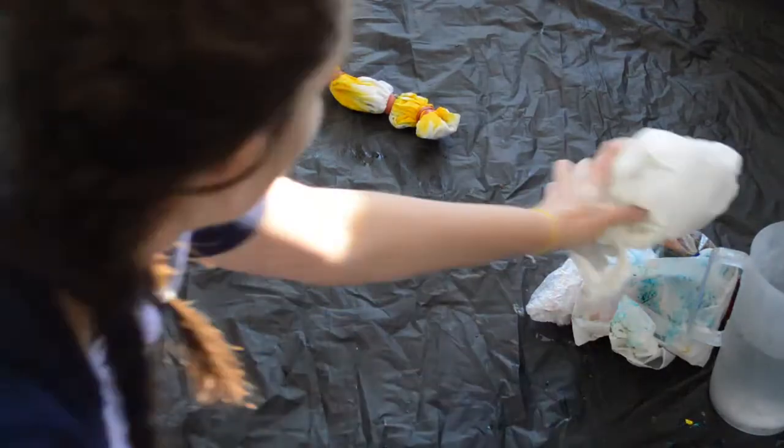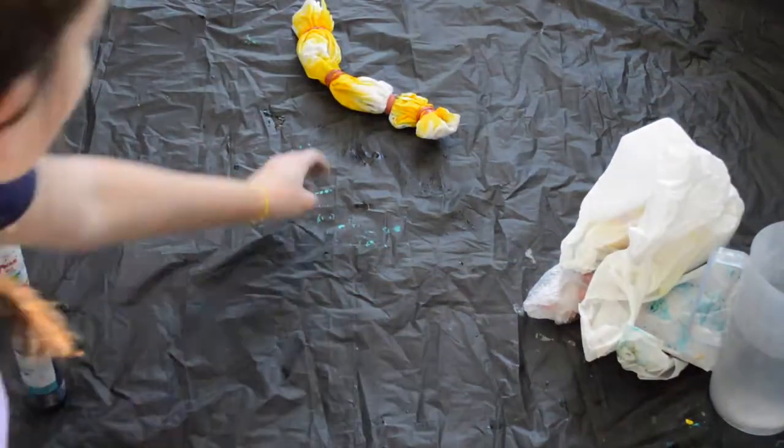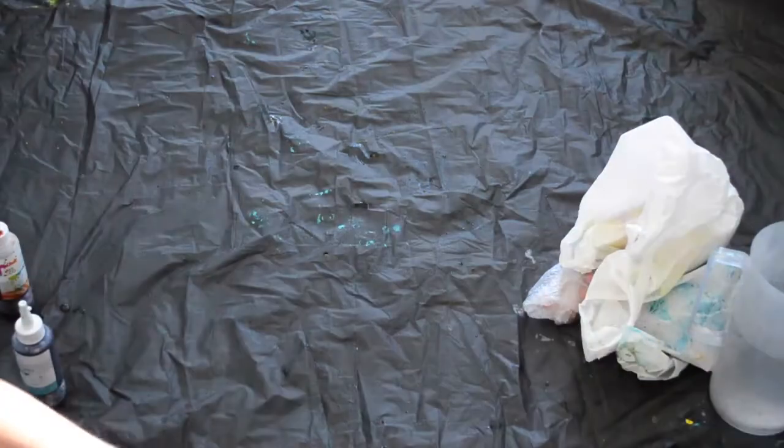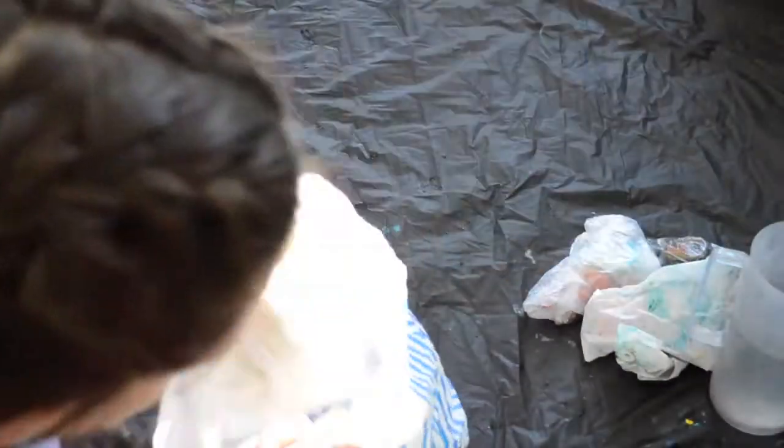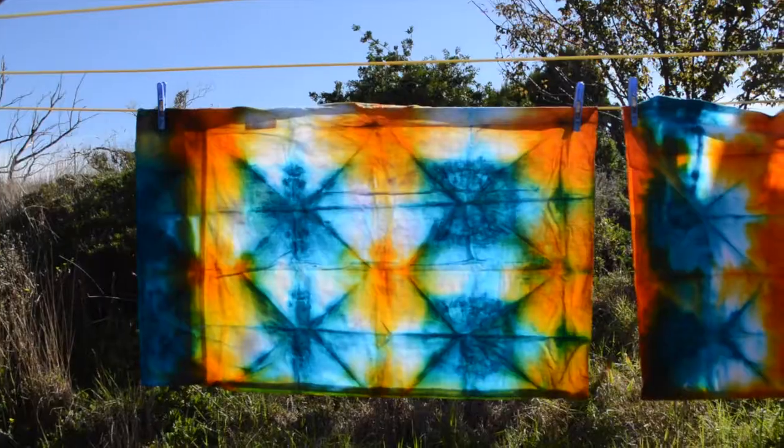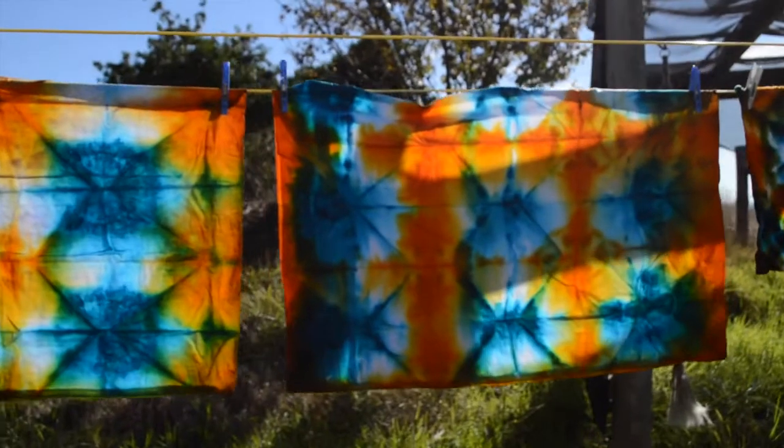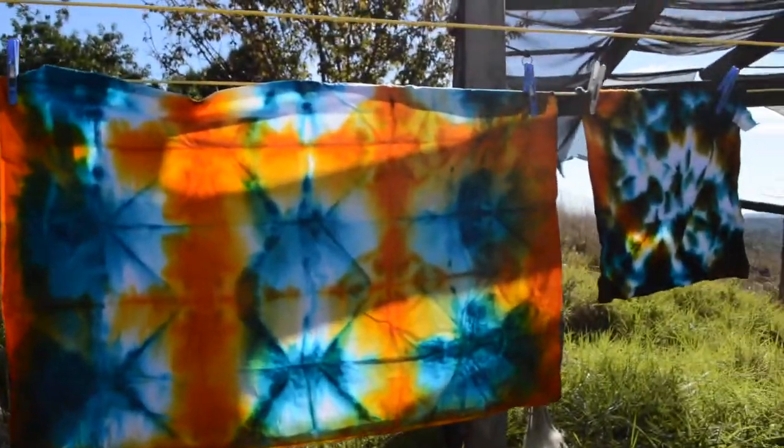The major mistake I made in my first tie-dye video was that after I set them aside for 24 hours I then immediately rinsed them. This is what I am not doing this time. I am putting them straight on the line to dry so that they are completely dried before I rinse them at all. So this is what they look like straight out of the bags.